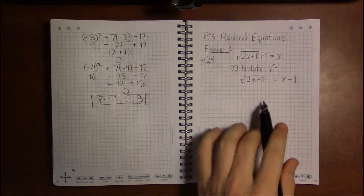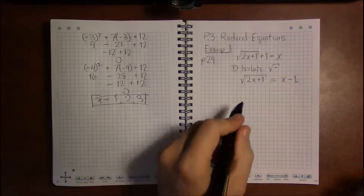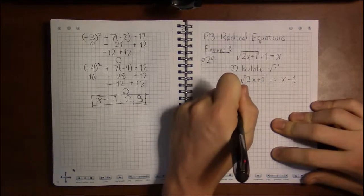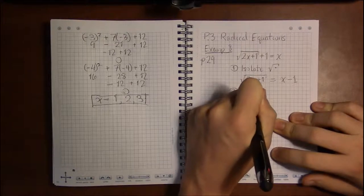So the whole point of this is to get the square root by itself so then you can square both sides, or in other words, get rid of the radical.